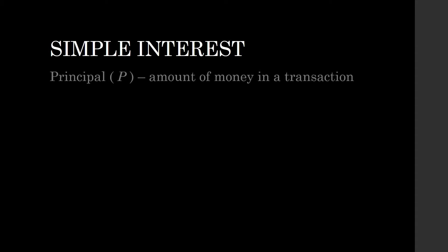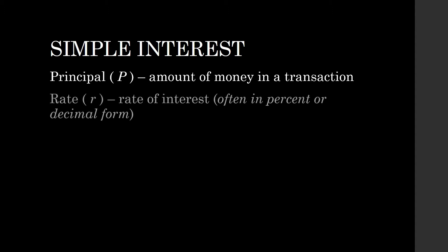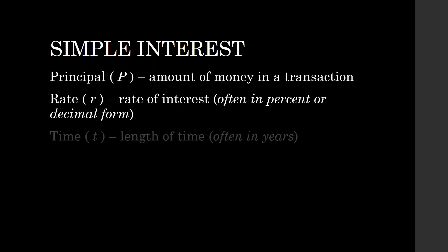What are the terms or terminologies that often appear when we talk about interest? You have principal, denoted by P — it's the amount of money that is involved in a transaction. Rate, or rate of interest, denoted by R, is often written as a percent or sometimes in decimal form.